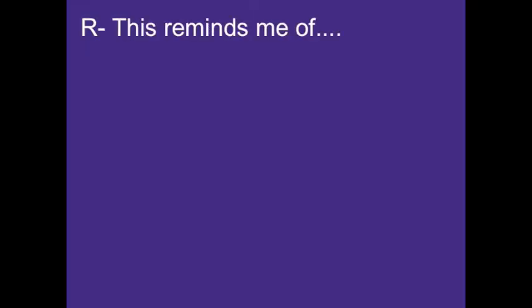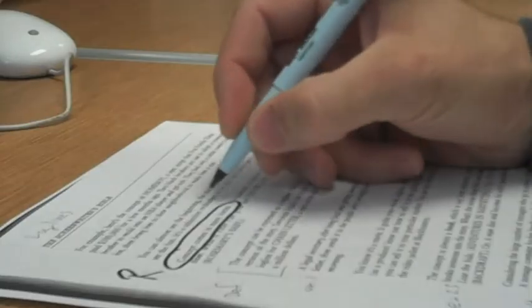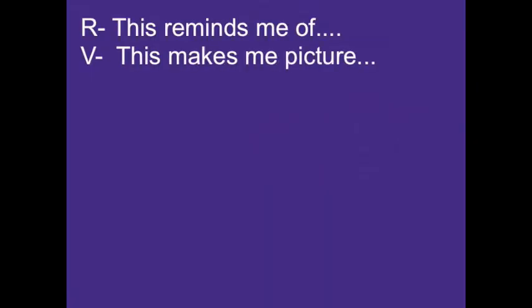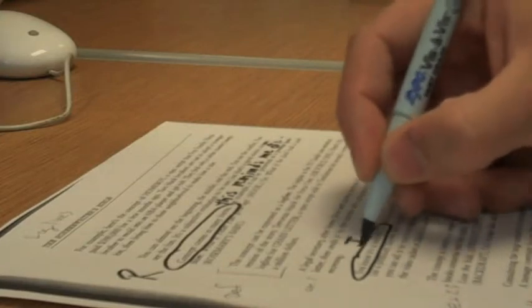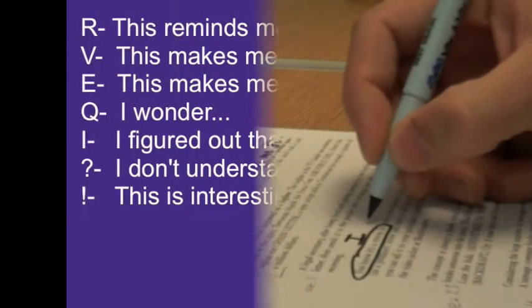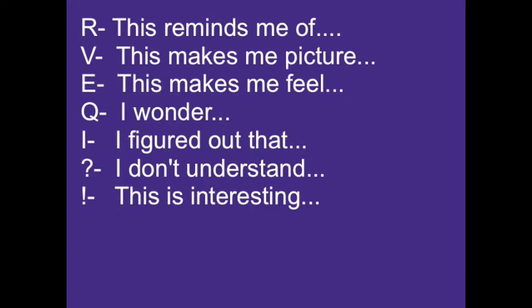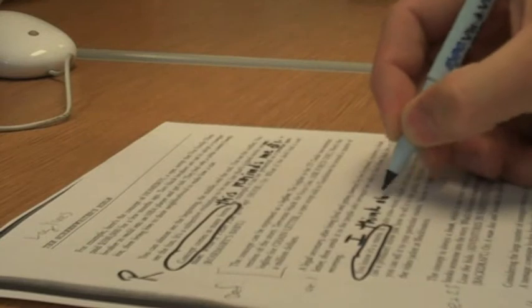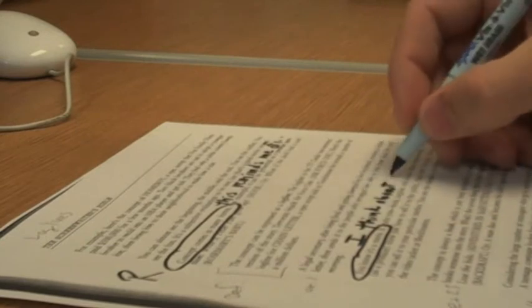There's R for 'this reminds me of,' V for visualizations, E for emotion, Q for wonderment, I for 'I figured out,' questions for questions that they have, and exclamation points for things that are remarkable to them while they read.